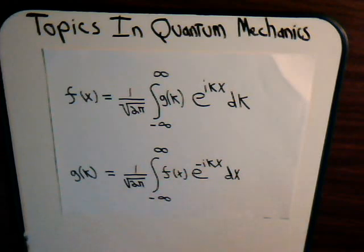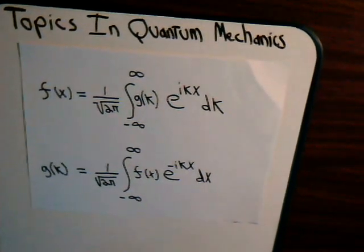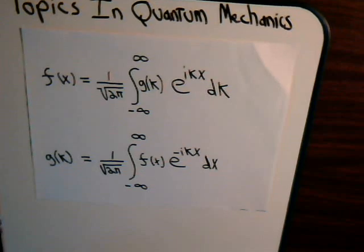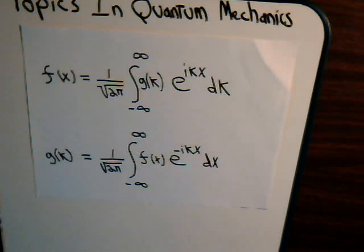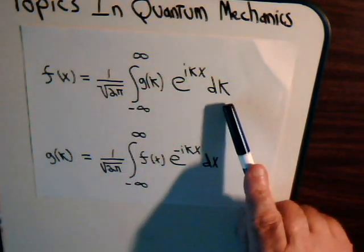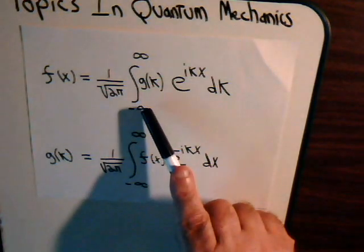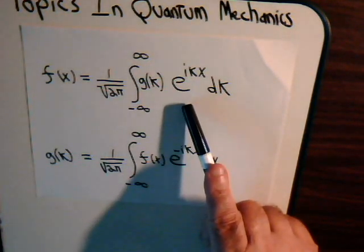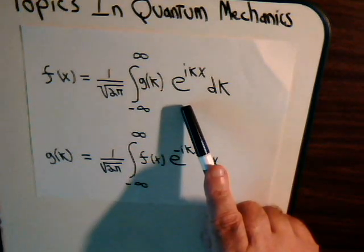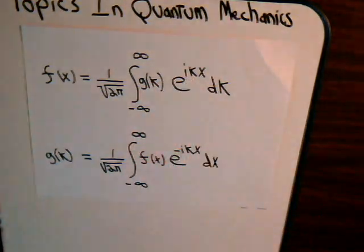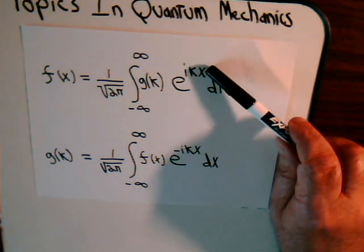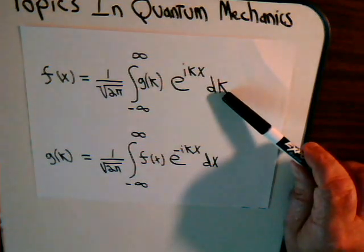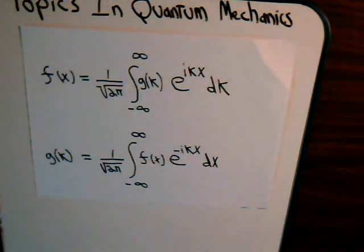Here is an expression for a typical Fourier transform pair. Let's look at what's inside the integral. We have some function g of k, and we're integrating with respect to k. This function is being multiplied by an exponential function, e to the ikx, where i is the square root of negative one. As far as the integral is concerned, x is a variable but not for this integral — we're integrating with respect to k, so x is just being treated as a constant.